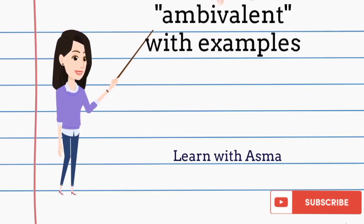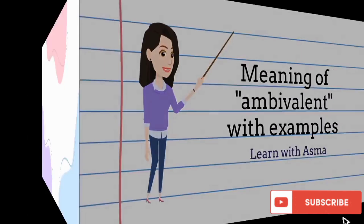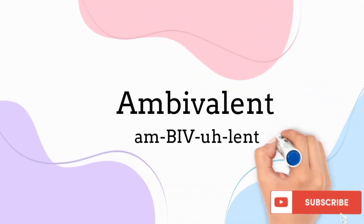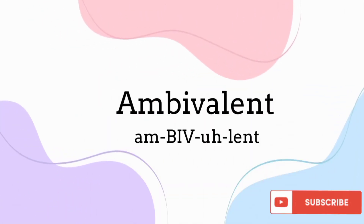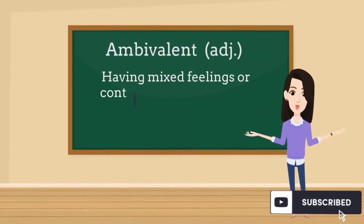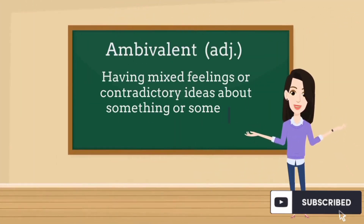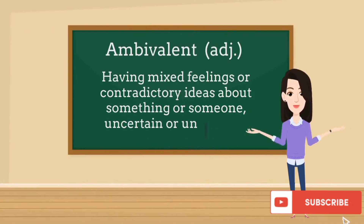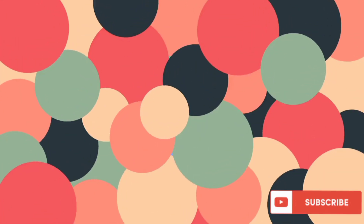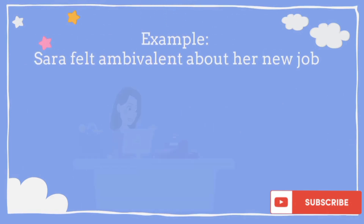Hi and welcome to Learn with Asma. Today we're going to talk about the word 'ambivalent.' Ambivalent is an adjective meaning having mixed feelings or contradictory ideas about something or someone — uncertain or undecided.